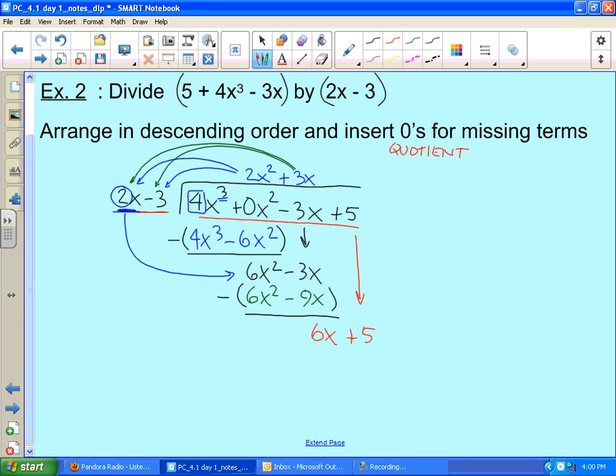And then once again, what do I do to 2x to make it become 6x? I take 2x and multiply it by 3. And now we do that process again: 3 times 2x gives 6x, times -3 gives -9. We're subtracting this again, and I get a 5 + 9 or 14 as a remainder. Now there's nothing else to drop down, so that becomes my remainder value.